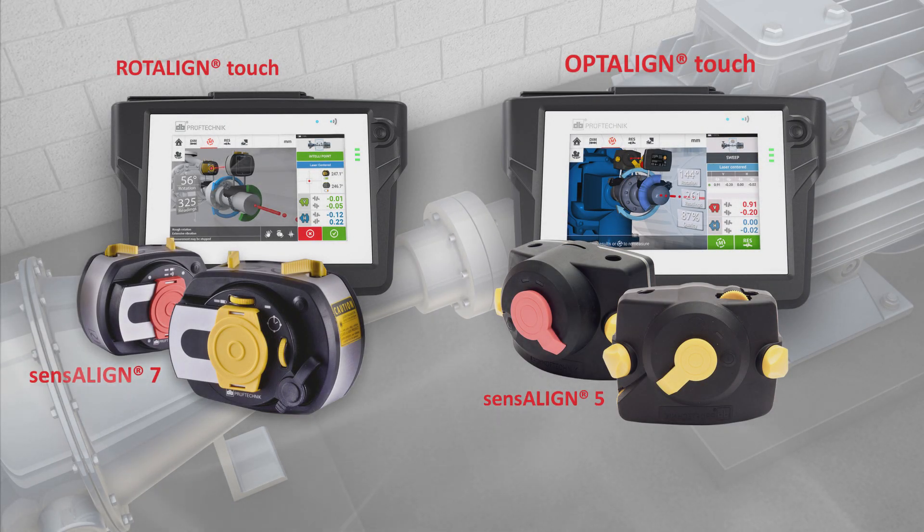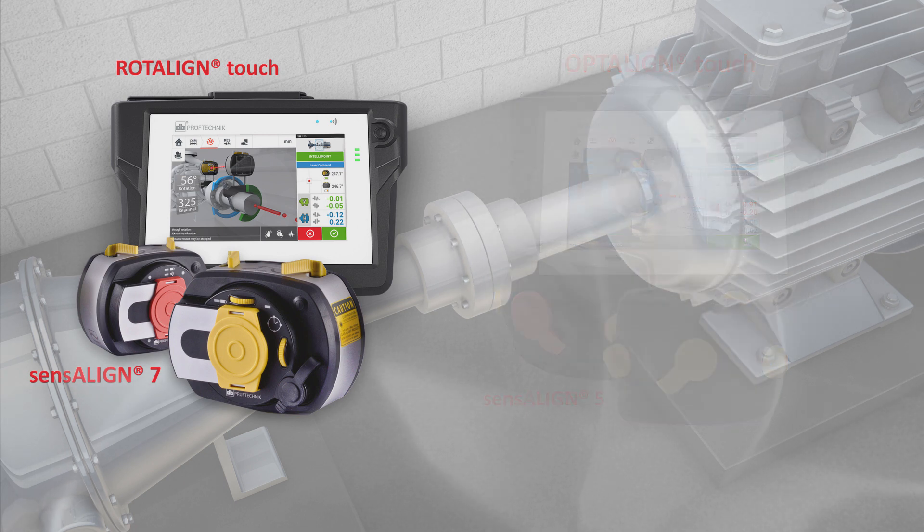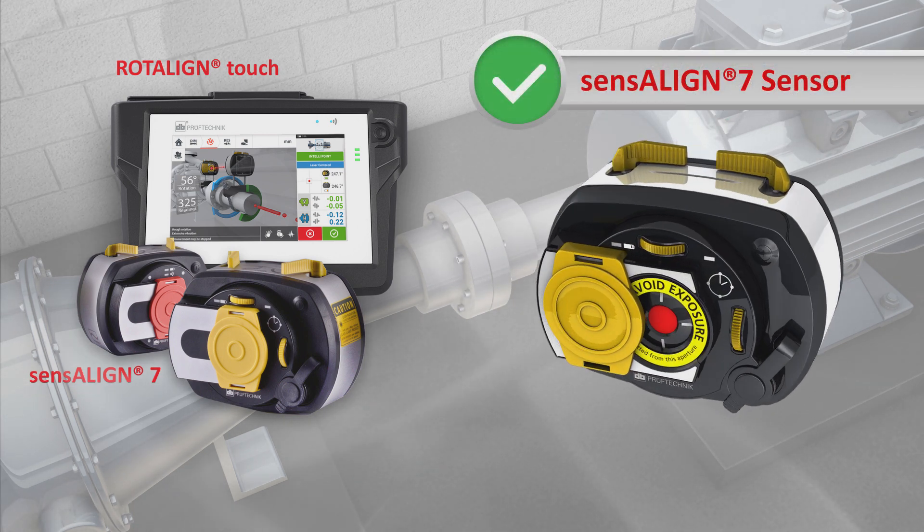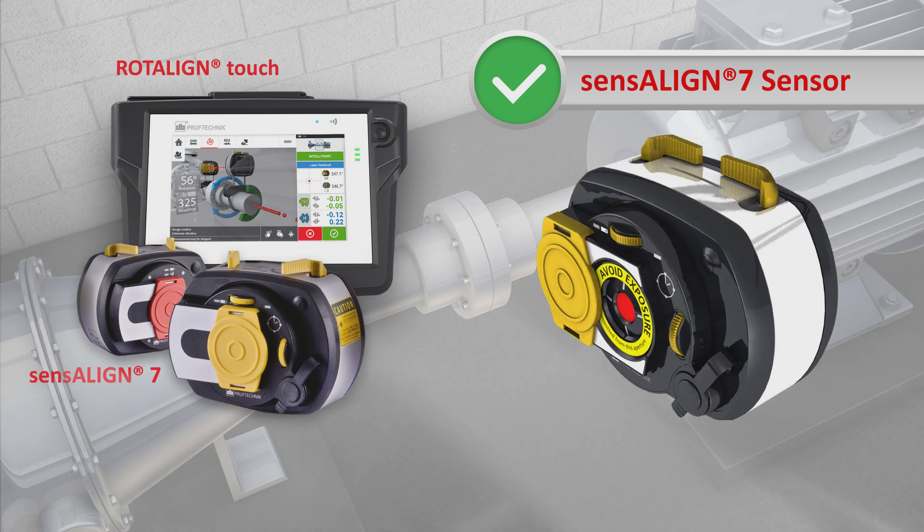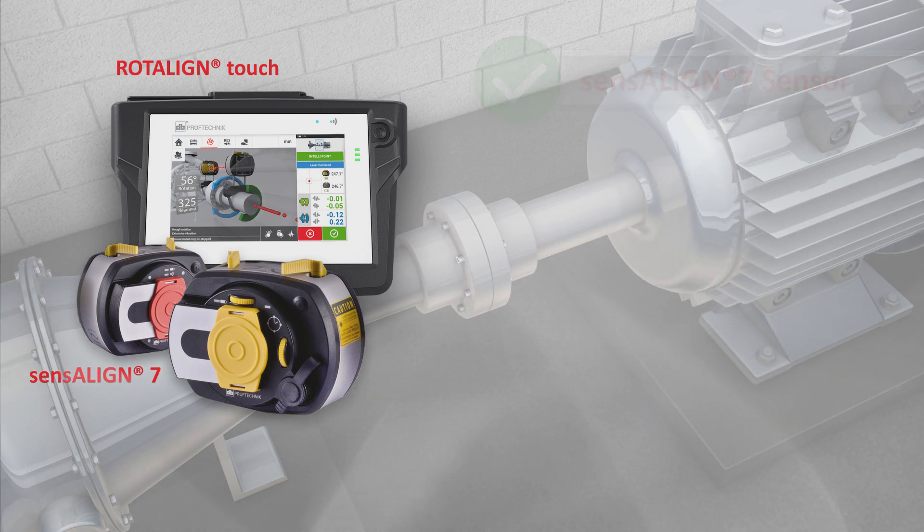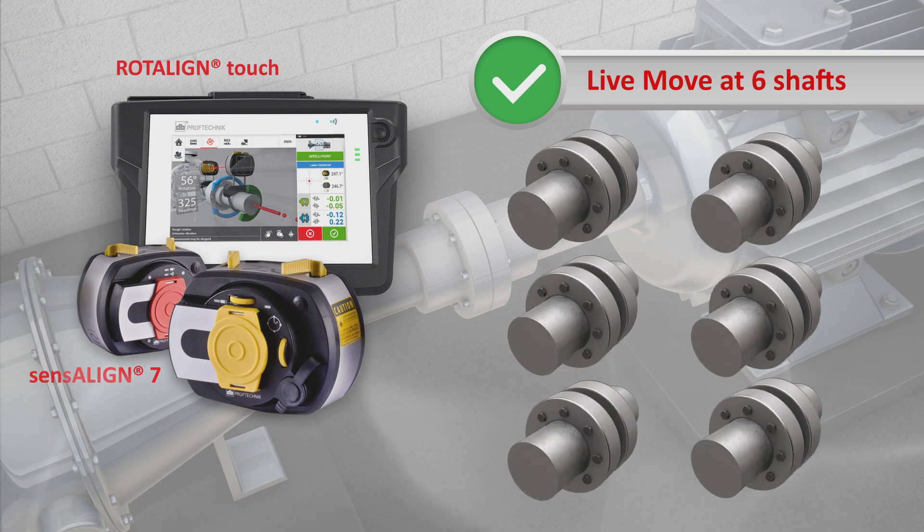ROTALIGN touch is featuring the high-performance SensALIGN 7 laser sensor heads, including all Pruftechnik intelligent shaft alignment features such as the advanced multi-coupling measurement and live move of up to six shafts couplings at a time.